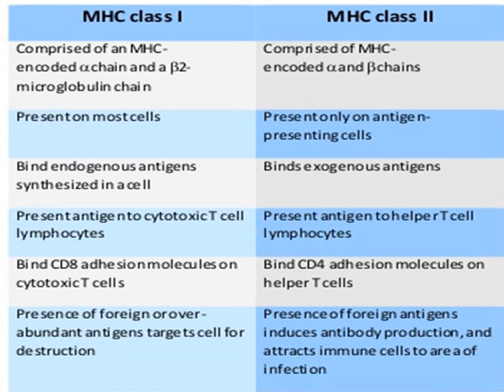You can look at the table in Levinson's book, which provides a very good summary of the important differences between MHC class 1 and class 2 proteins — normally three or four key differences are highlighted.